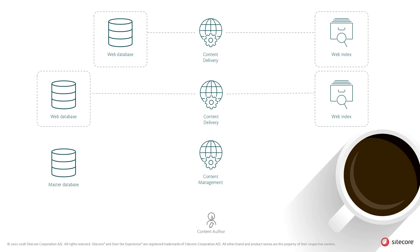In the default configuration, the content management role can only access one set of web database and web index. Therefore, in these scaled scenarios, it's not possible for an administrator to manually trigger a re-index of the web indexes for all publishing targets. Therefore, a custom solution has to be provided for the system to be able to re-index the multiple web indexes. Please refer to the Sitecore API documentation for more information.